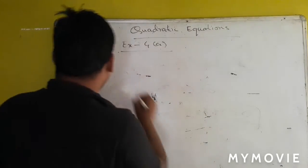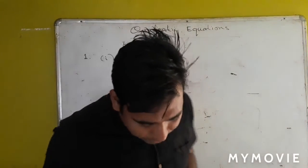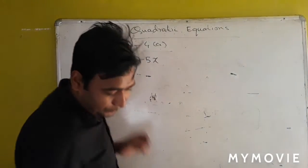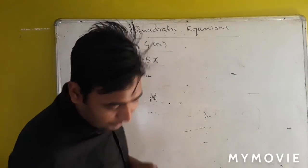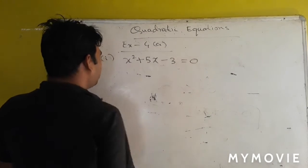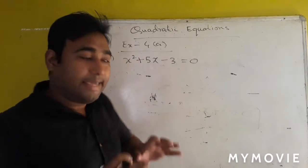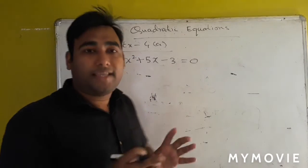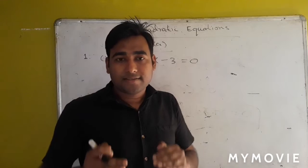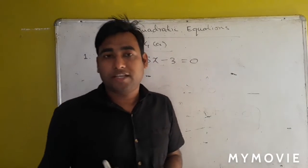Question number 1, sub-number 1 is: x squared plus 5x minus 3 equals 0. We just have to check if this equation is a quadratic equation or not. If the equation is of the form ax squared plus bx plus c equals 0, then the given equation is a quadratic equation.